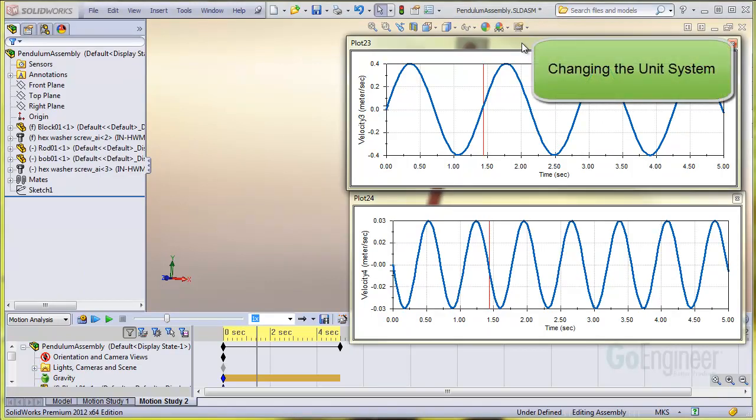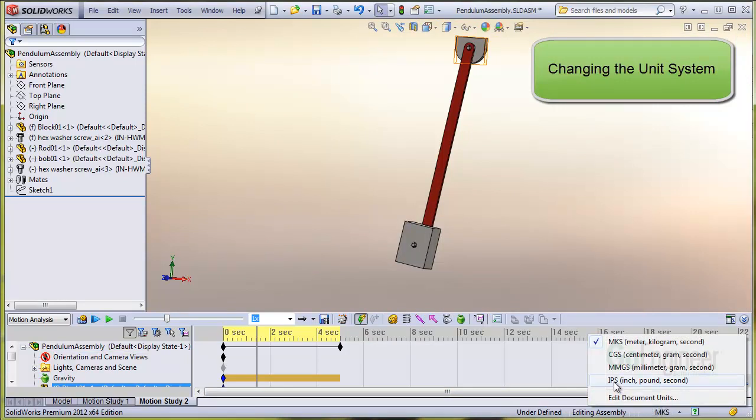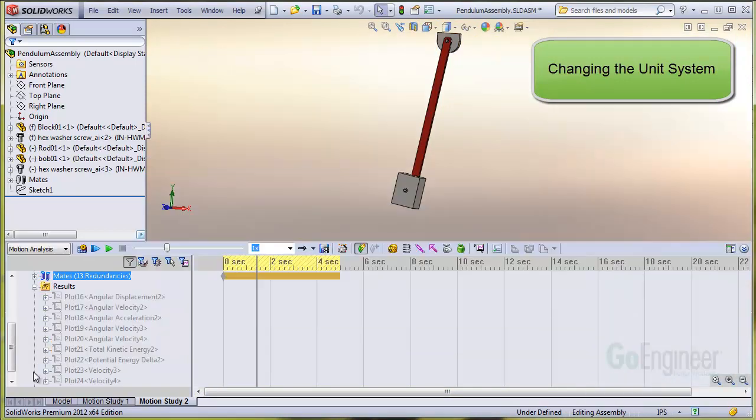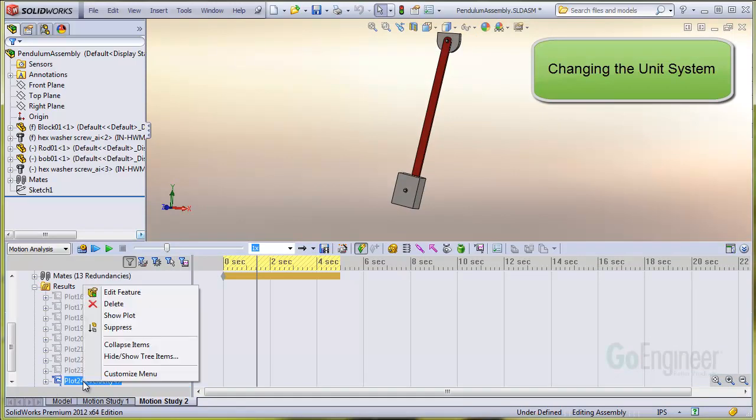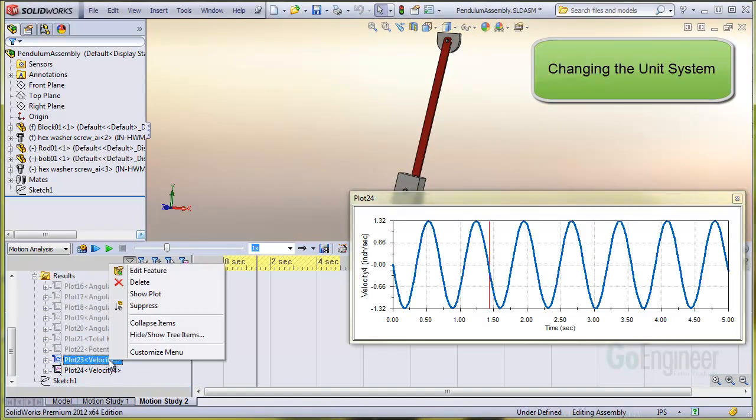Of course, you may not have the units that you want. In SOLIDWORKS 2012, you can change this from the units tag at the bottom margin of the window. I'll close the graphs, then change the units to inch pound second, then show the graphs. And you can see the linear velocity is now in inches per second.